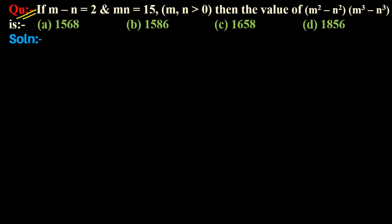Given: if m minus n equals 2 and mn equals 15, where m comma n greater than 0, then find the value of m squared minus n squared into m cubed minus n cubed.